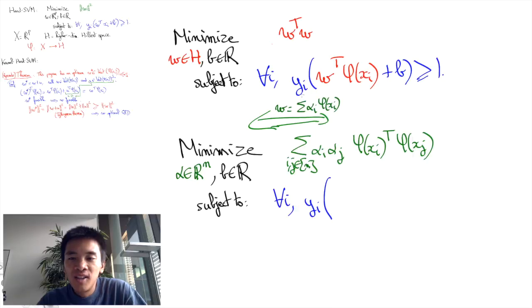Subject to yi times the sum of alpha j phi of XJ transpose phi of XI plus B greater than 1.